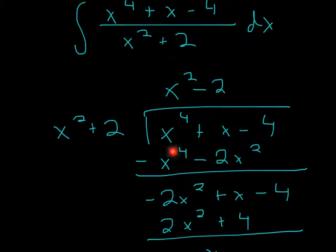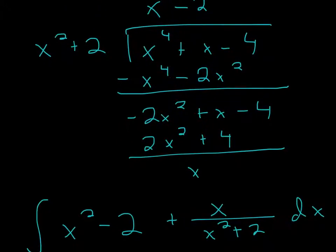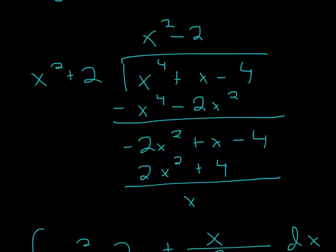So these two are going to cancel. x to the 4th and x to the 4th, they're going to cancel. And then negative 2x squared, you leave right here. Now you pull down everything left, so it's going to be negative 2x squared, and then x minus 4. And now you're going to do the same thing.